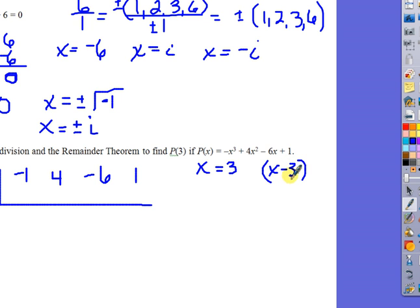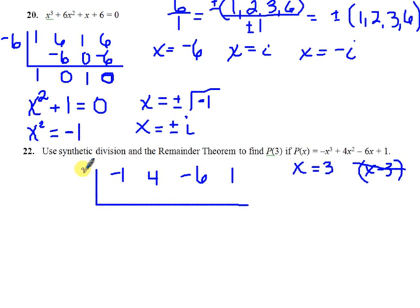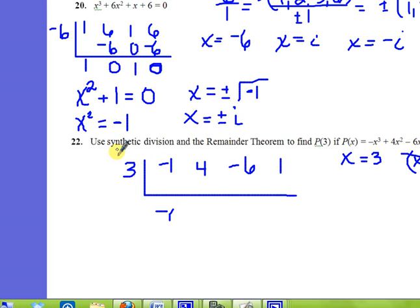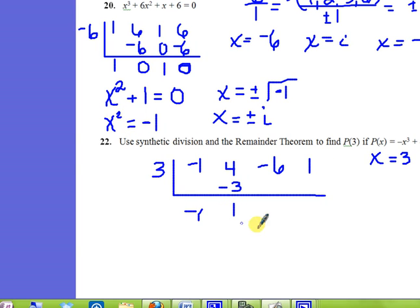Minus three or anything. So since it's not written like that, since x is already solved for, then you're going to put just that number over here. Drop down your negative one and begin the process of synthetic division. Three times negative one is negative three, add those together you get one, three times one is once again a three.